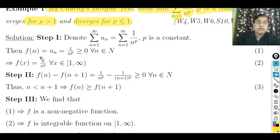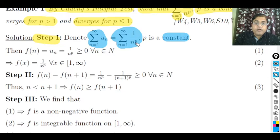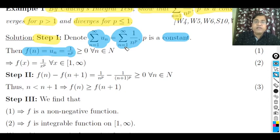Stepwise solution. Step 1 — Denote the series as Σu_n = Σ(1/n^p), n varying from 1 to infinity, where p is constant. So 1/n^p represents u_n, and therefore f(n) = u_n = 1/n^p. Here p is constant and n is a natural number varying from 1 to infinity.